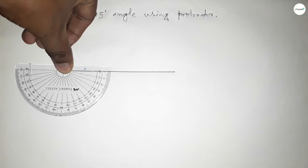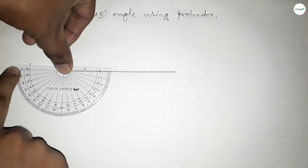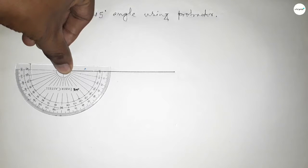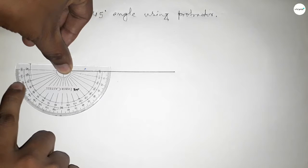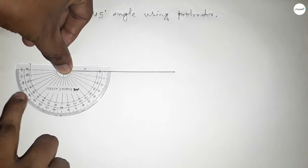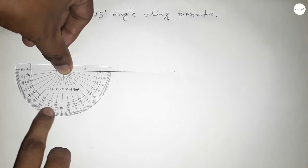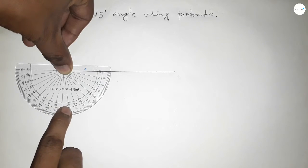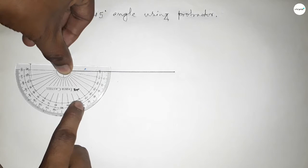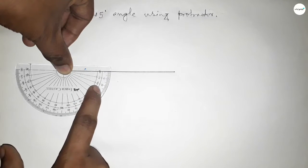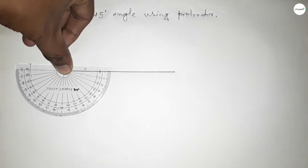So we have to add extra 165 degree angle with 180 degree angle. So this is 180 degree angle. Now counting 165 degree angle: 10, 20, 30, 40, 50, 60, 70, 80, 90, 100, 110, 120, 130, 140, 150, 160, and this is 165.